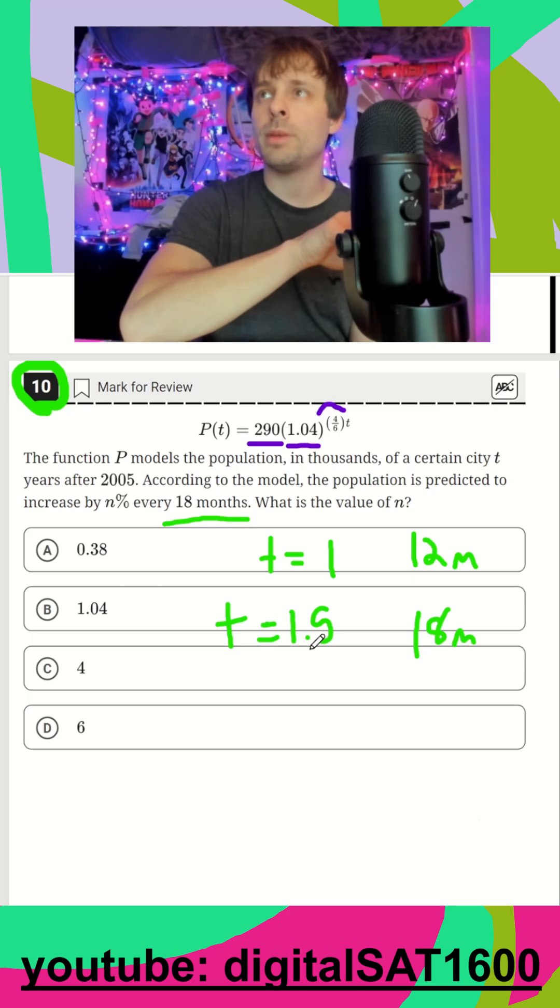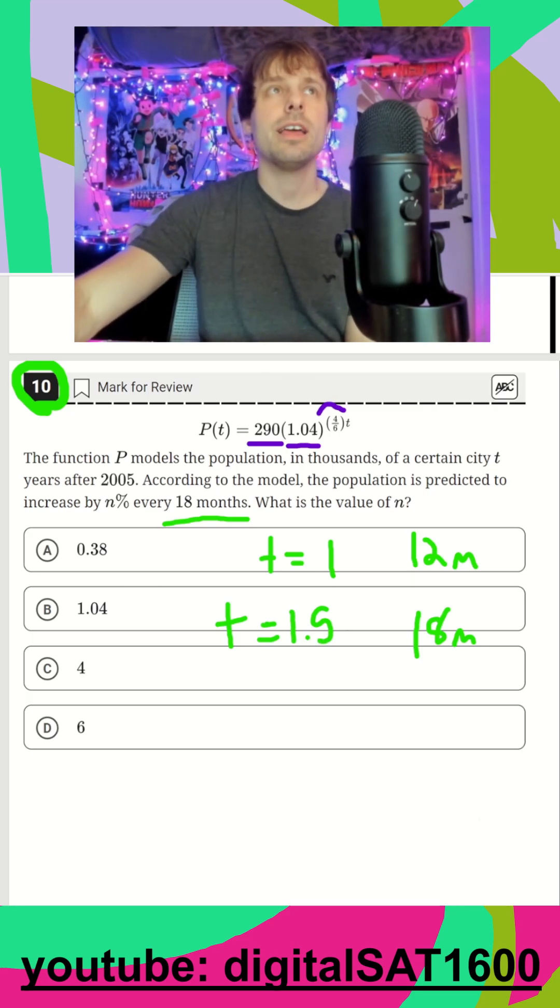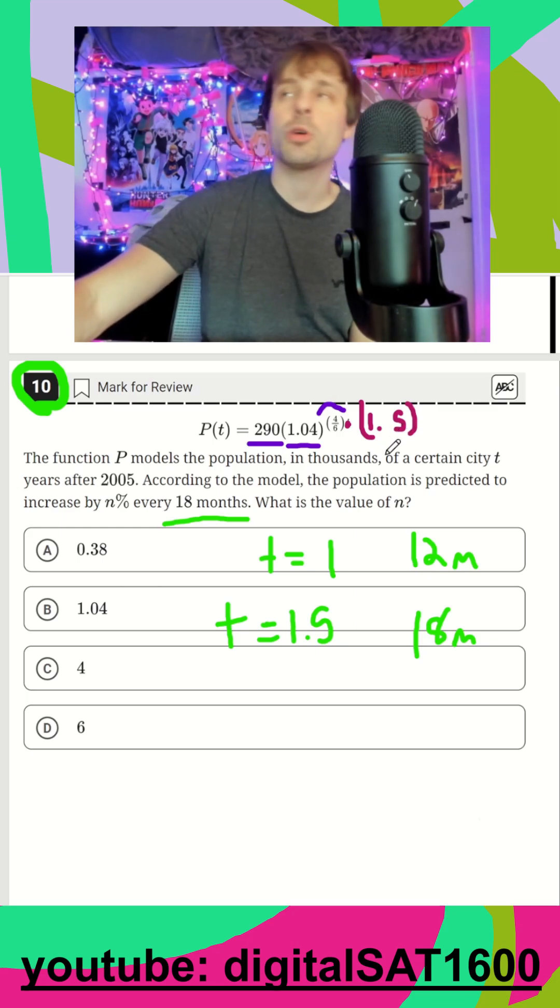So before we even worry about that 4.6, maybe they set it up for us as a coincidence here. If I plug in 1.5 for t, because that would be every 18 months, that becomes 1.5. And if you calculate 1.5 times 4 over 6, that actually just gets you an exponent of 1.